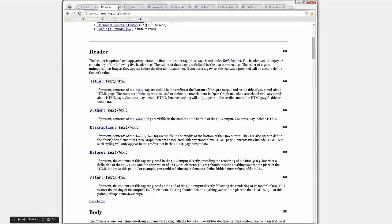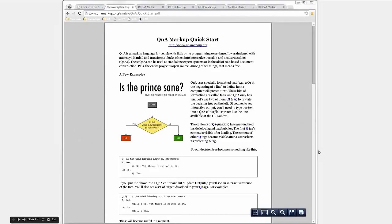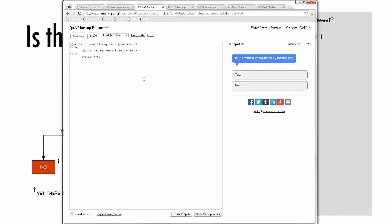Let's play around with some examples — they all have to do with flowcharts. What type of lawyer would I be if I didn't make a Shakespeare reference? Here's a very simple flowchart: you ask 'is the wind blowing north by northwest?' If yes, there is a method in it. If no, yes. The two main tags you need to understand are the Q tag and the A tag. The Q tag is the question or prompt the computer will give you; the A is your answer.